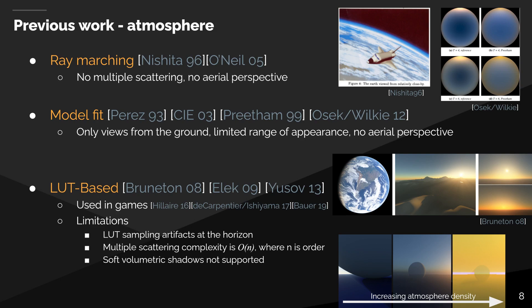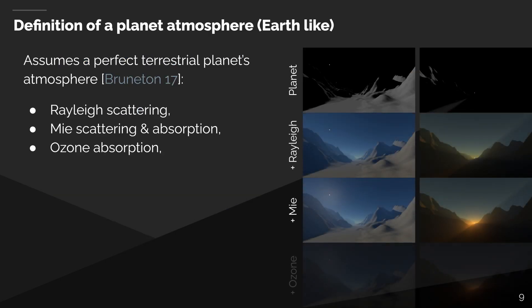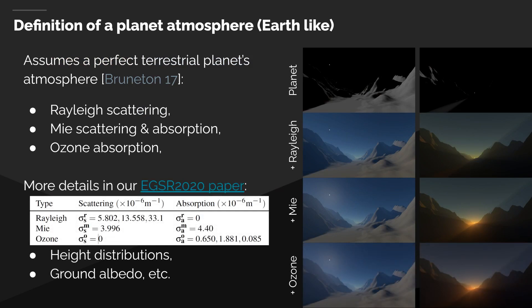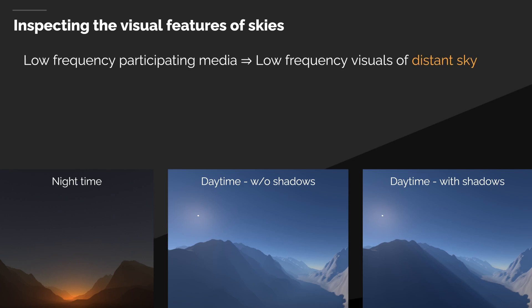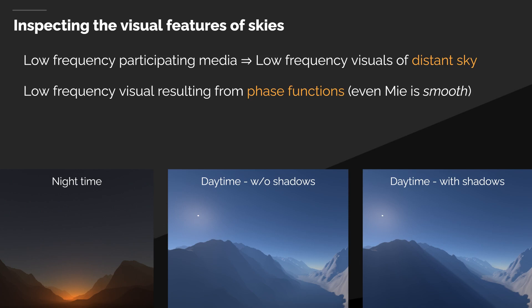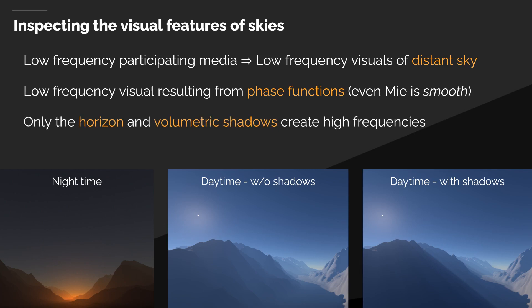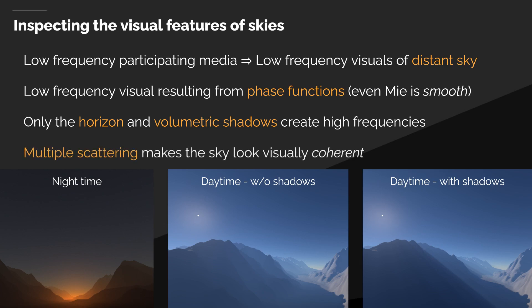Before diving into the rendering technique, we represent the atmosphere and material the same way as in previous work — please refer to our EGSR paper for more details. We started by looking at what is really required to render the sky, similar to identifying representative characteristics of a BRDF. One can easily notice that the distant sky is of very low frequency. Even the Mie-scattering lobe is a soft blob around the sun, and aerial perspective is also very smooth on screen and in depth. The only high frequencies are the rapid change of atmosphere color near the horizon and the variation due to volumetric shadows. We also recognize the importance of multiple scattering for faithfully representing atmospheric scattering and achieving more believable visual results.